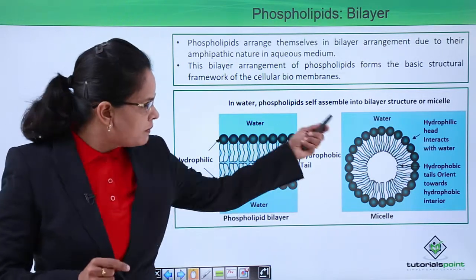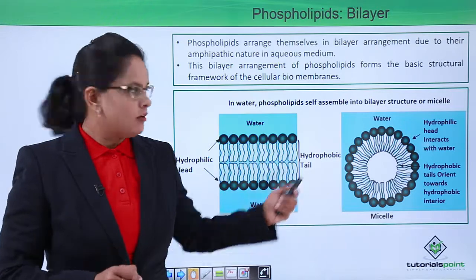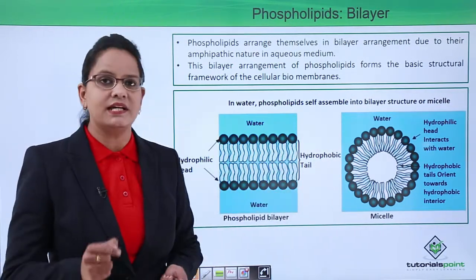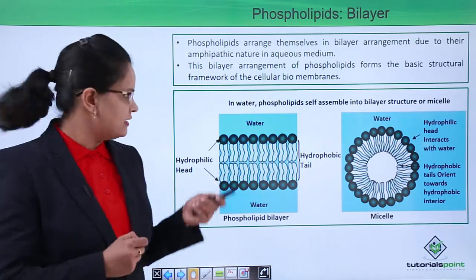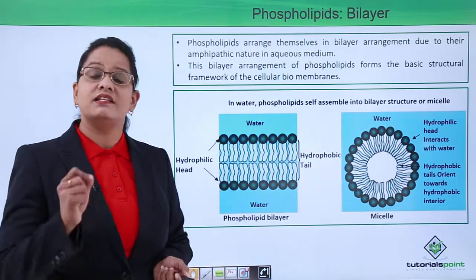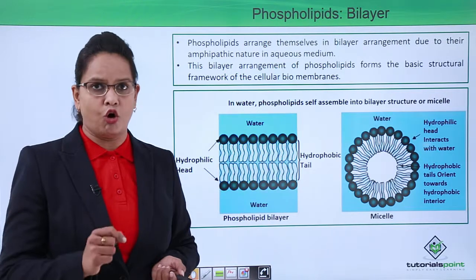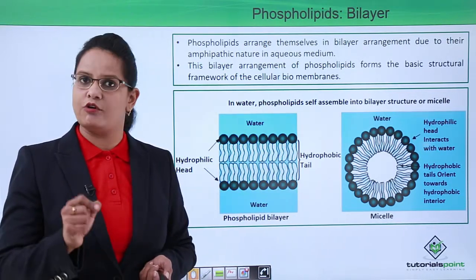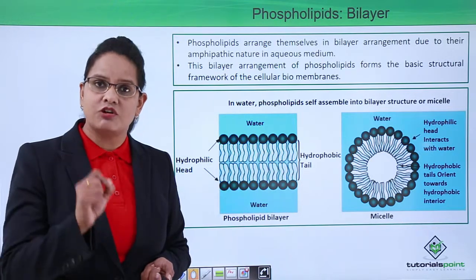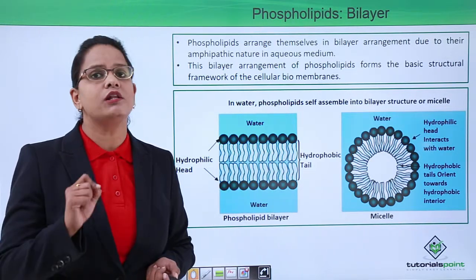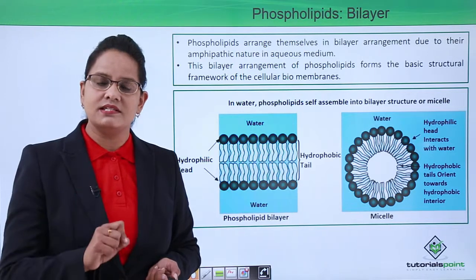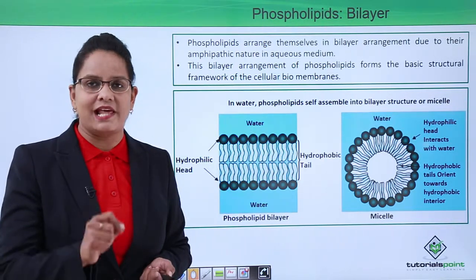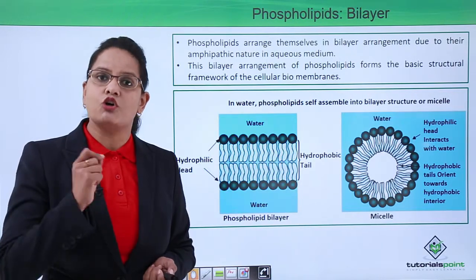The head and tail form a micelle-like structure. The head faces towards the water, so it is water-loving, and the tail is present on the inside. When extended, it looks like the structure of a cell membrane. This lipid bilayer arrangement of phospholipids forms the structural basis for all cellular biomembranes, which is why lipids are an important component of the cell bilayer — also known as membrane lipids.